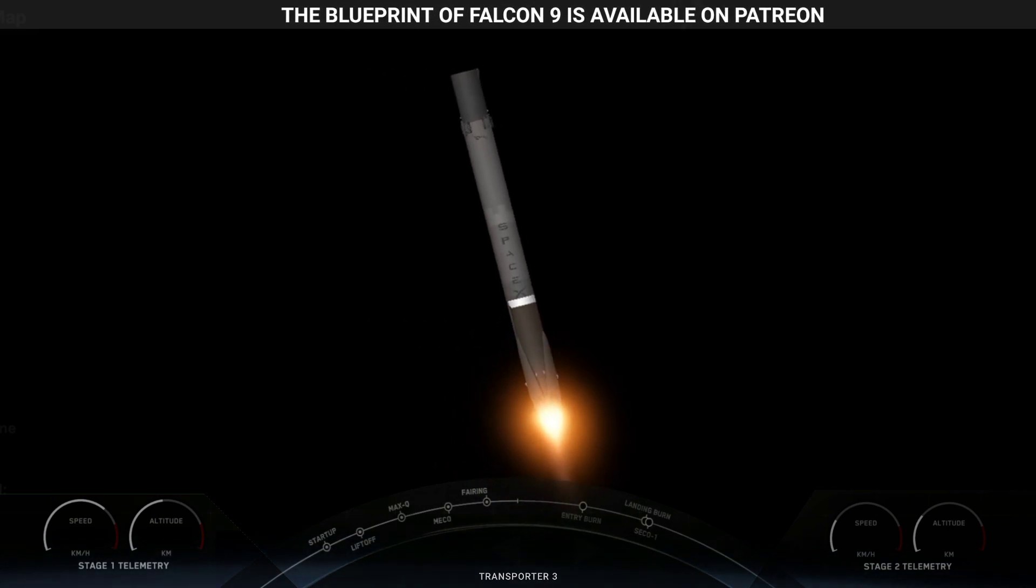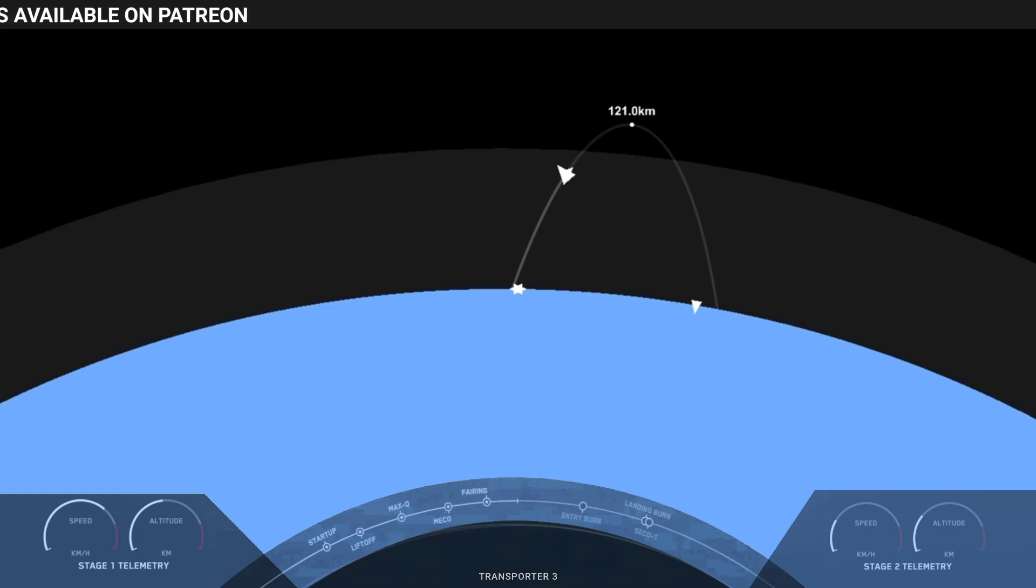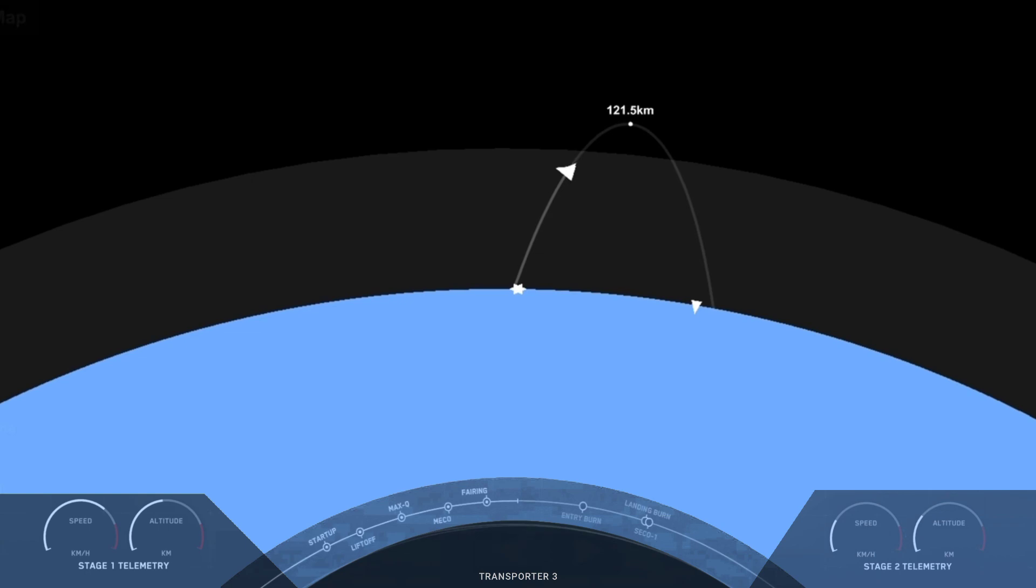So you can see there on the right hand side of your screen, second stage Mvac engine has ignited. The first stage on the left hand side is performing the boost back, which as you saw just moments ago, the first stage flipped itself over and is now making its way back to the coast of Florida.